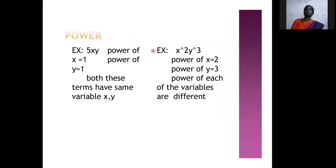Next, power. Here we will take one example: 5xy. In this example, power of x is equal to 1 and power of y is equal to 1. Both these terms have the same variables x and y, and powers are also the same. Another example: x squared, y cubed. In this example, power of x is equal to 2 and power of y is equal to 3. Power of each of the variables are different — x power is 2, y power is 3. So, power of x and y is different.